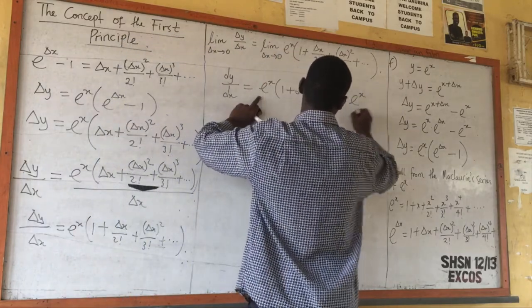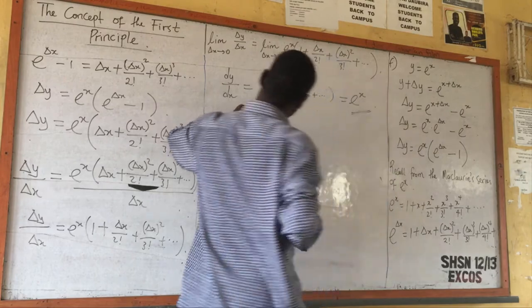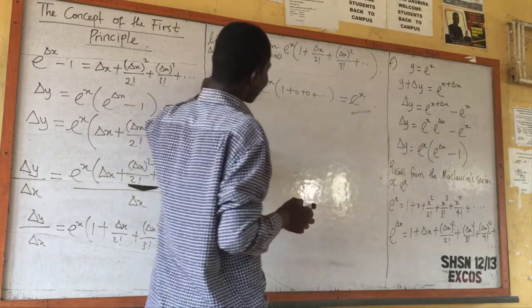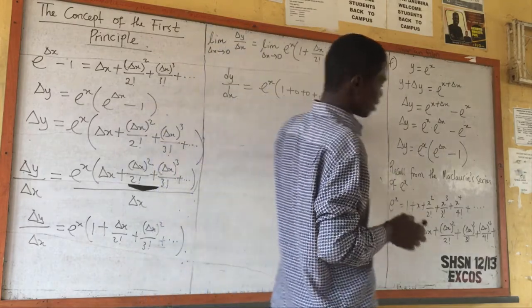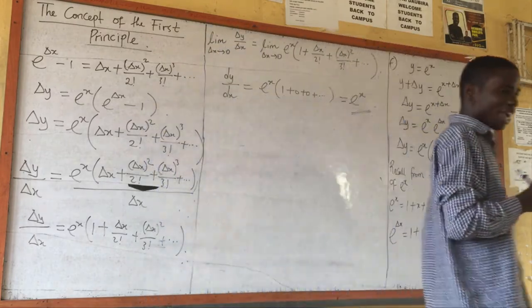So we have the derivative: dy/ds is equal to e raised power s. The derivative of exponential s is exponential s.